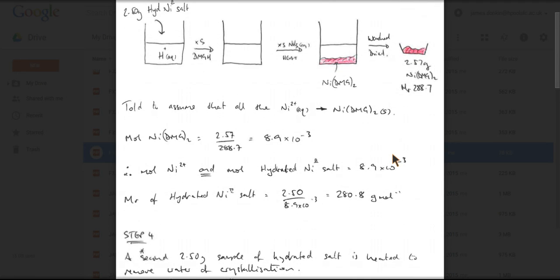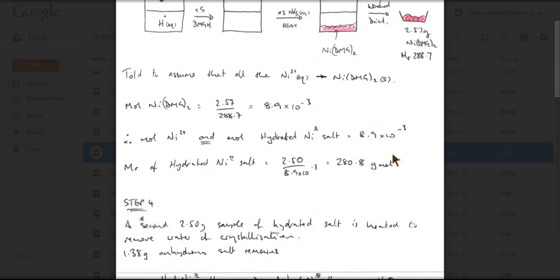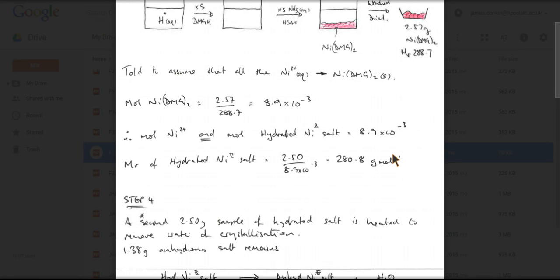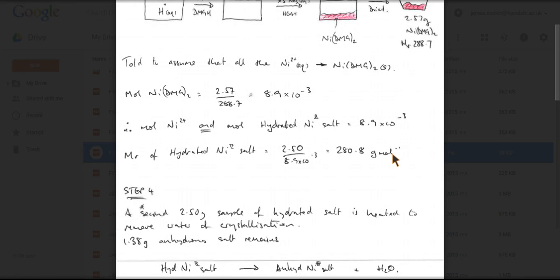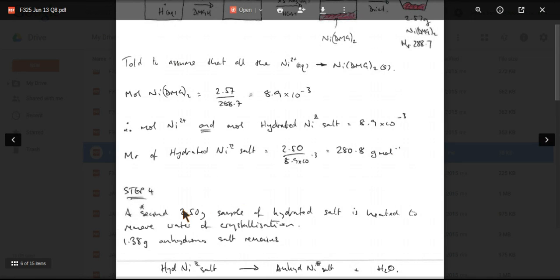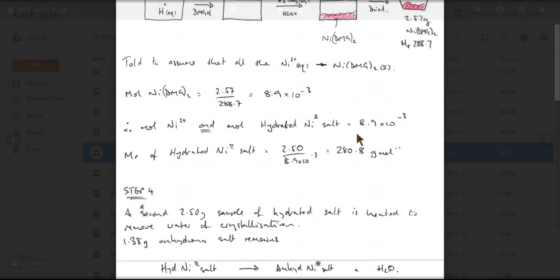And then it goes on and says in step 4, a second two and a half gram sample of hydrated nickel 2 salt is heated to remove the water of crystallization. 1.38 grams of anhydrous salt remains. Because they are using the same mass of the hydrated nickel 2 salt, all of this calculation here is going to be relevant. So we're going to use these moles in step 4.